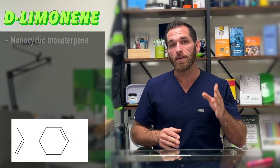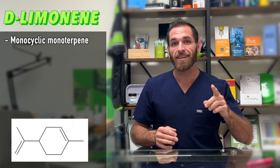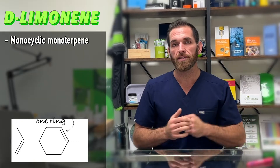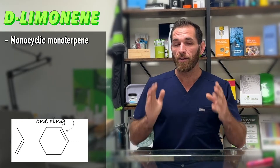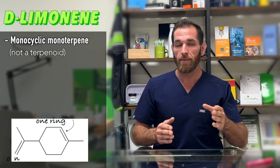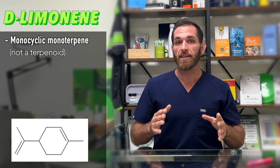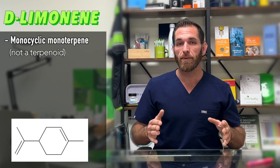D-limonene, aka 4-isopropanol-1-methylcyclohexene, is a monocyclic monoterpene, which means it contains one ring in its structure. Notice it's a terpene, not a terpenoid, because there are no oxygen molecules.